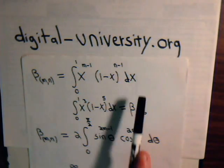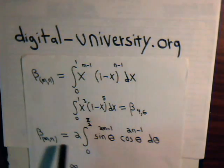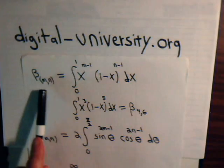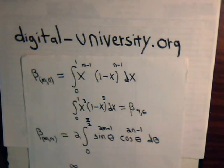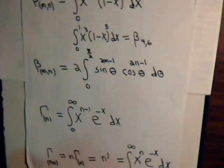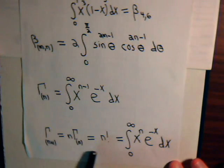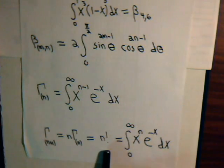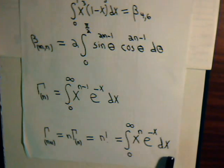In our introductory video we showed that the algebraic form equals the trigonometric form. In our previous video we also showed that the beta function of m, n equals the beta function of n, m — so we can reverse the order of the two arguments without changing the value. From the gamma integral function videos, we established the basic definition and the equations that gave us an integral expression for the factorial function, where n factorial equals that integral.